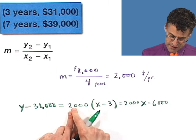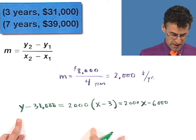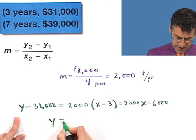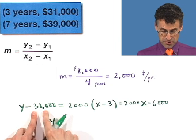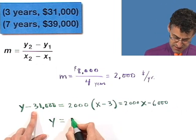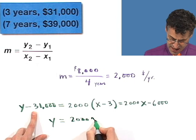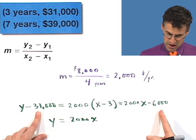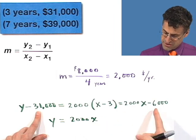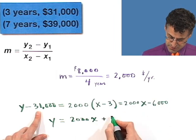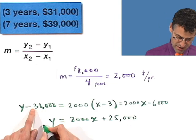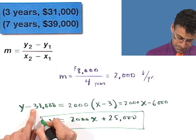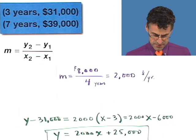And then if I want to solve this for y, all I've got to do is add 31,000 to both sides. And if I do that, I see 2,000x, and then if I take and add 31,000 to both sides, I see 31,000 minus 6,000 is plus 25,000.